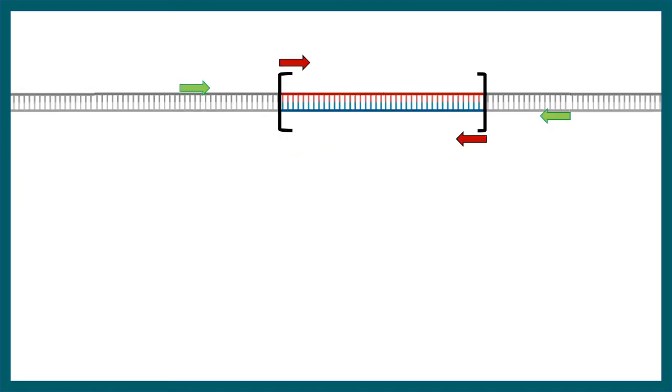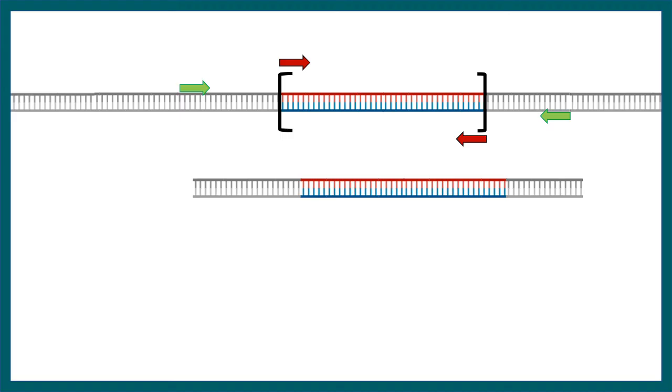Nested PCR has two sets of primers. This green set of primers would amplify a region which is slightly more than the region of interest. But this red set of primers would be dedicated for the region of interest. First, this green set of primers would act and it would amplify the region shown here. By chance, if these green primers also amplify a nonspecific product,